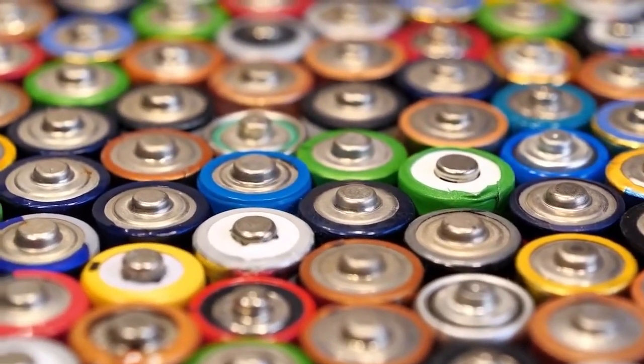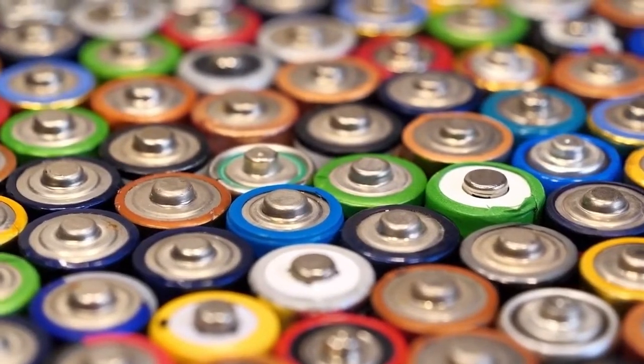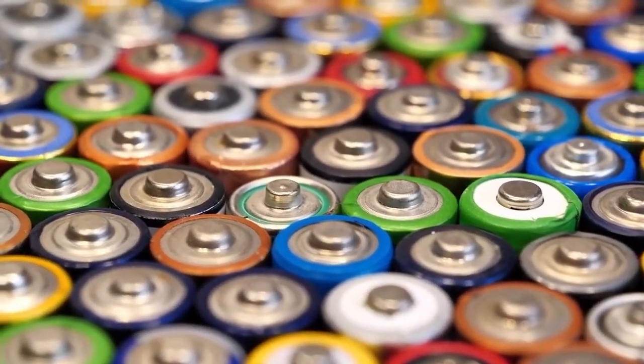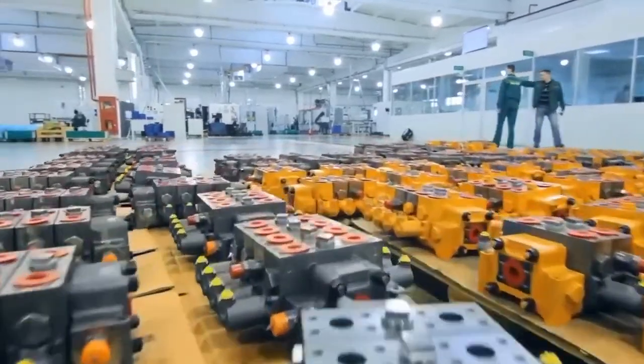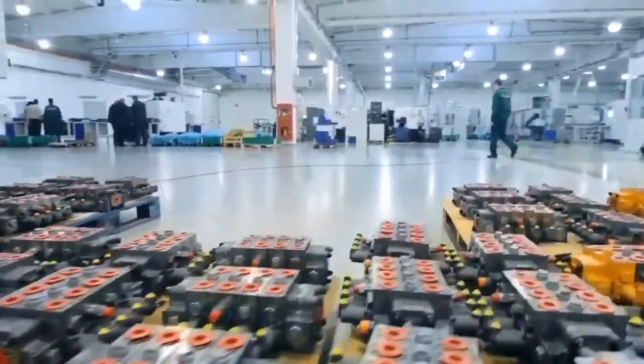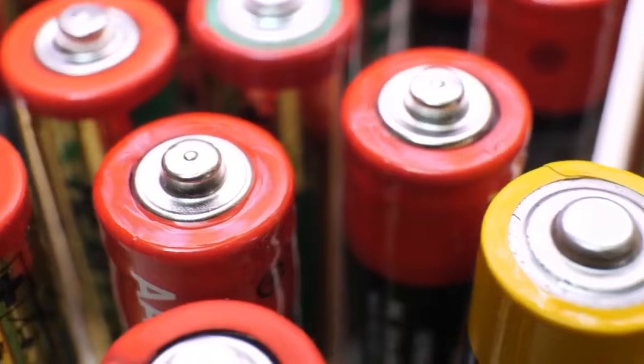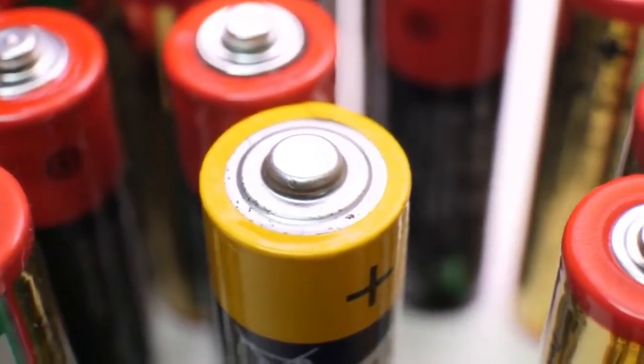Once assembled, the cells undergo testing to ensure they meet performance and safety standards. Testing facilities simulate real-world conditions, subjecting batteries to temperature extremes, mechanical stress, and overcharging scenarios to evaluate their durability and safety. From raw materials to finished products, the manufacturing of batteries involves a complex, yet meticulously orchestrated process.